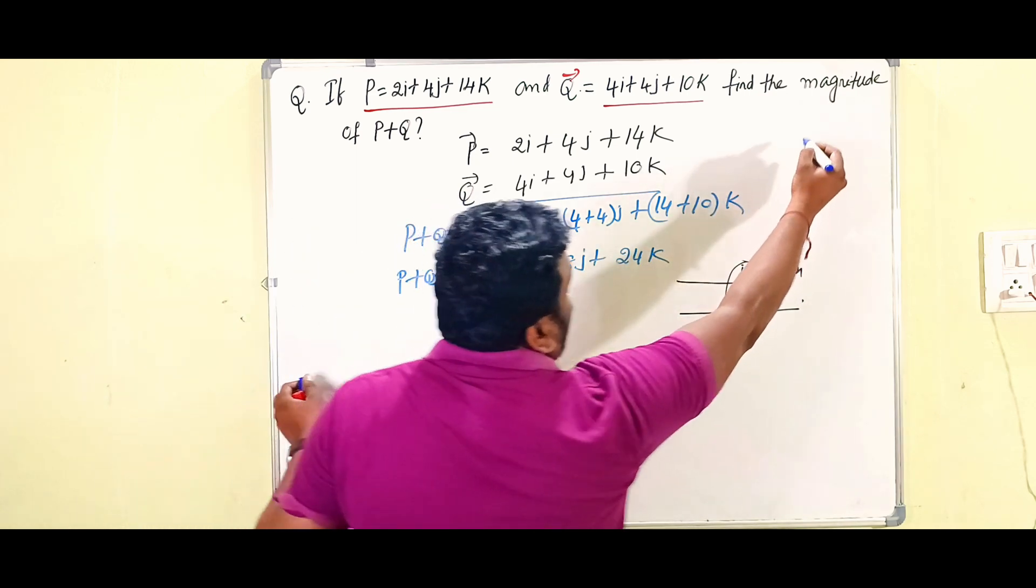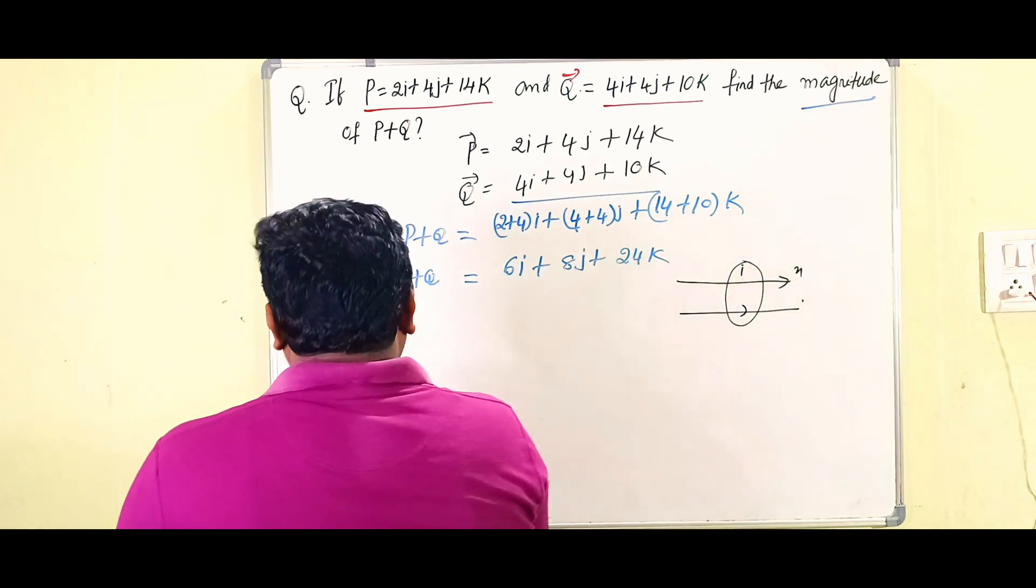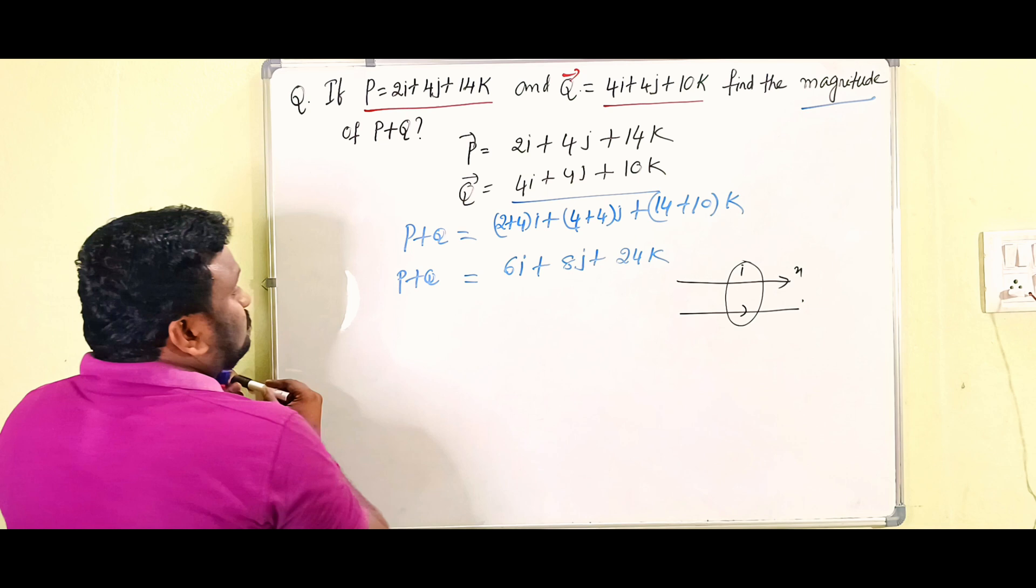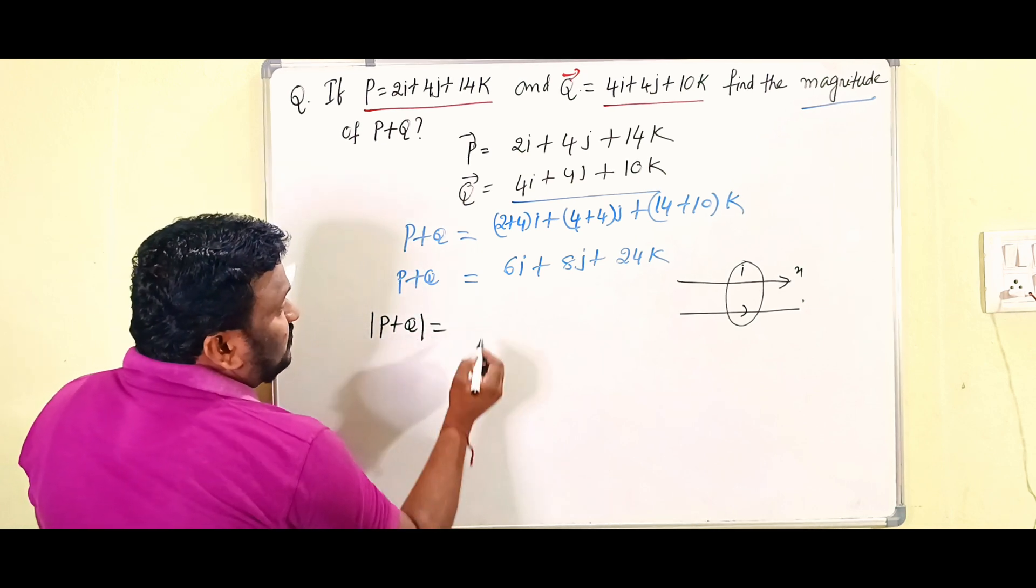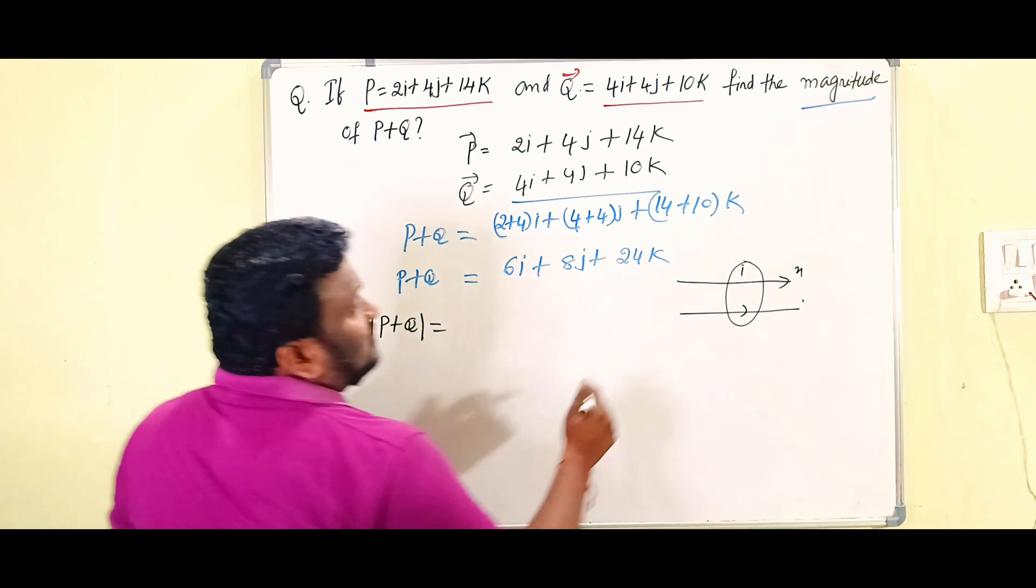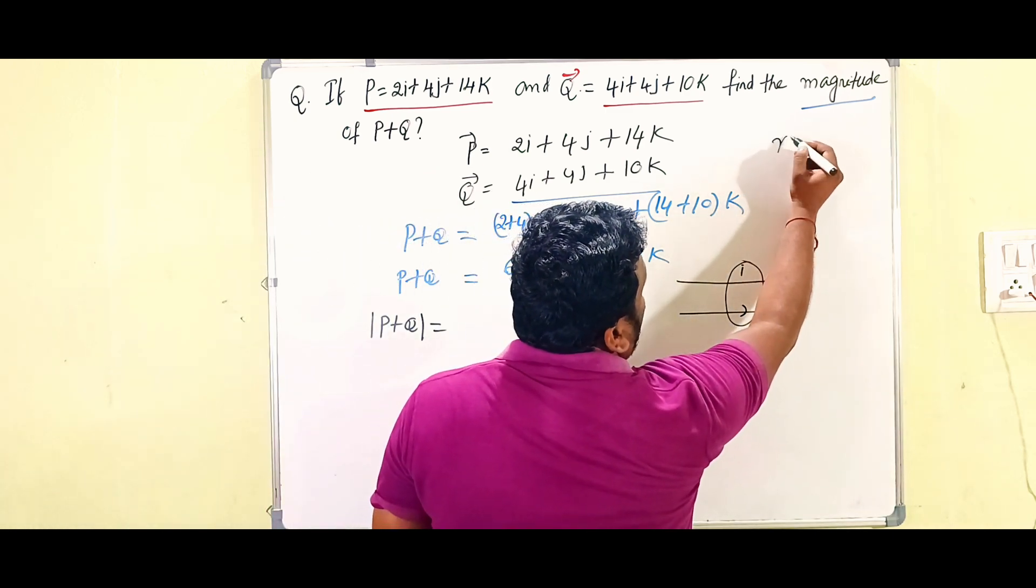What you have to find out? We have to find out the magnitude. That's why here we have to write mod of P plus Q. Mod of P plus Q is equals to what, children?